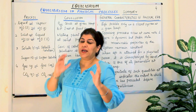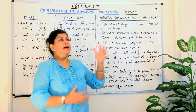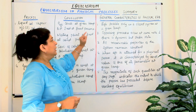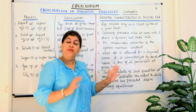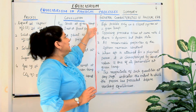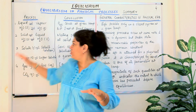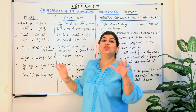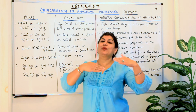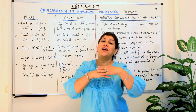That was a recapitulation of what we studied in the previous parts. Let us now summarize the general characteristics of physical equilibrium. The first point is that equilibrium is possible only in a closed system at a given temperature. In all these cases you have to keep the temperature constant, and in a closed system the temperature automatically becomes constant.